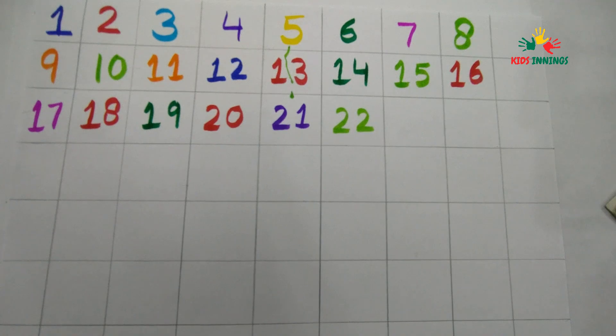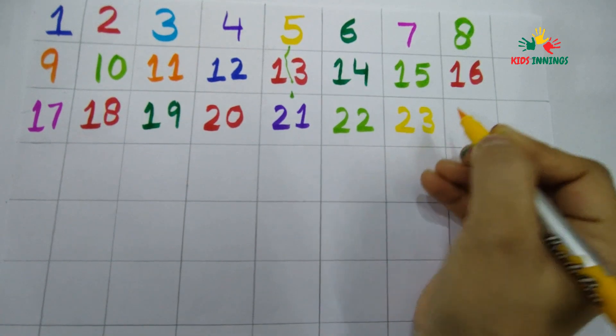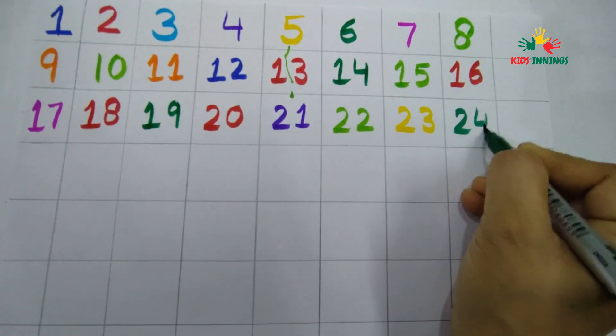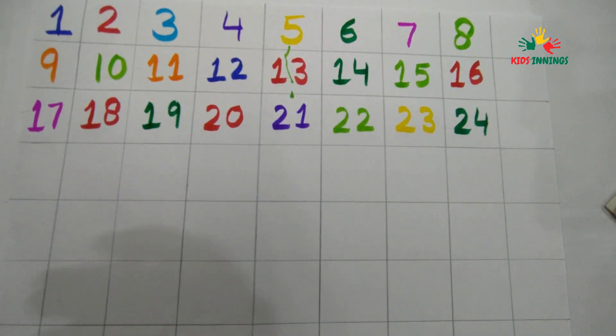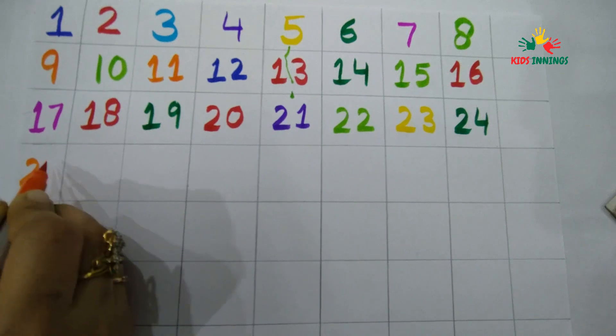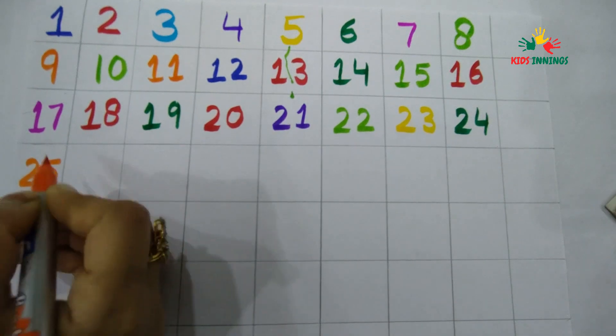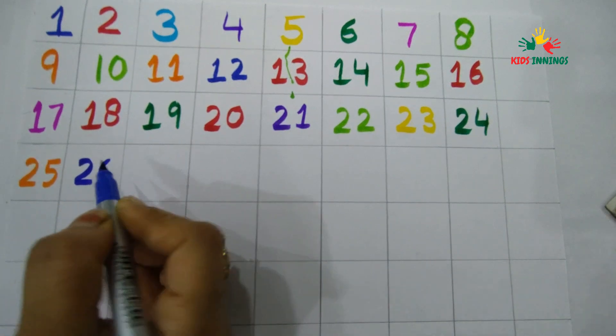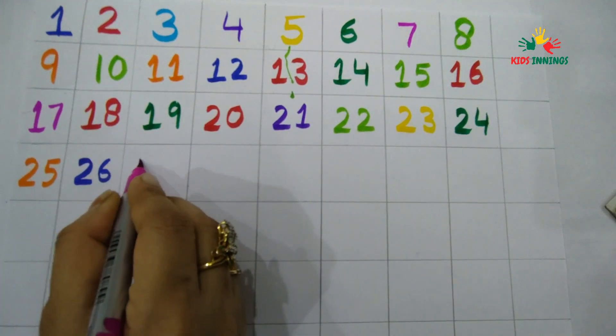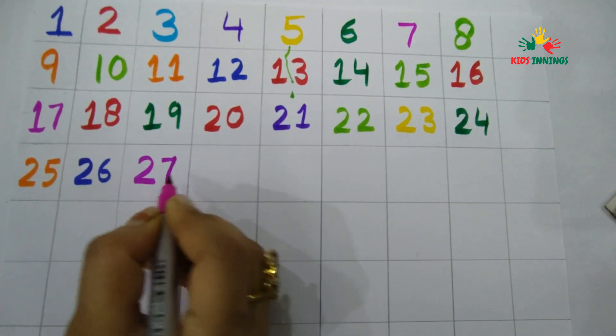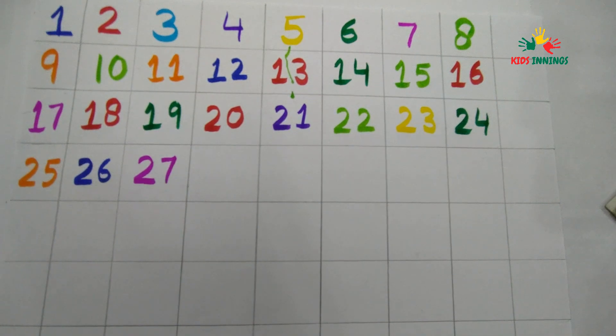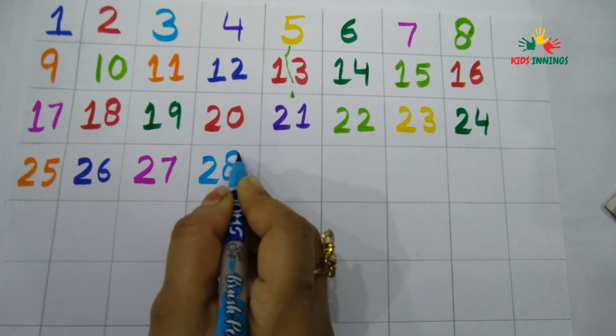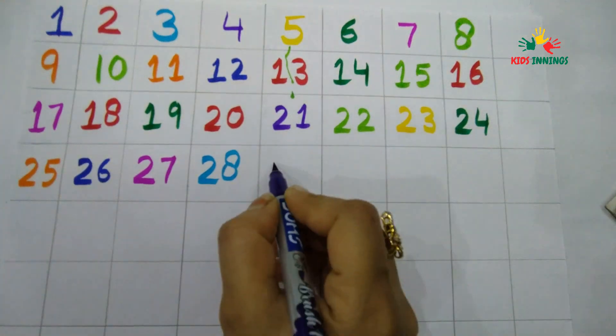Twenty-three (two three), twenty-four (two four), twenty-five (two five), twenty-six (two six), twenty-seven (two seven), twenty-eight (two eight).